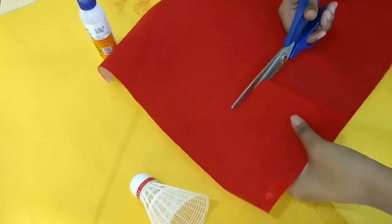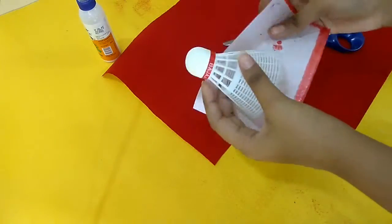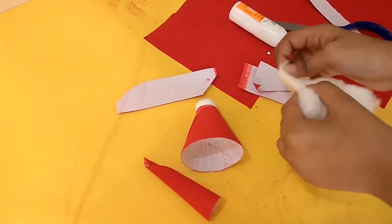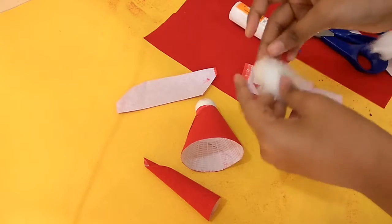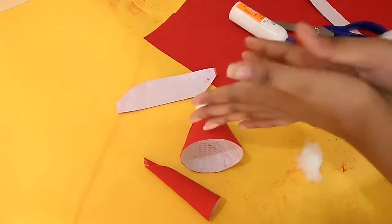So now comes the interesting part, the making of Santa Claus. For that you need a cork and velvet paper. I am using a red one and just put it around the cork. Once you are done covering your cork with velvet paper, make sure that you make a cone to make the cap of Santa Claus.